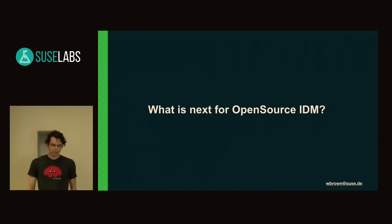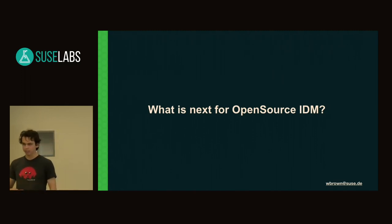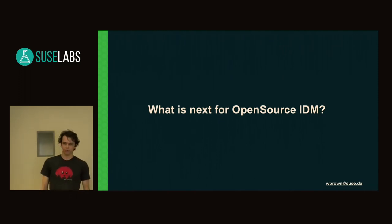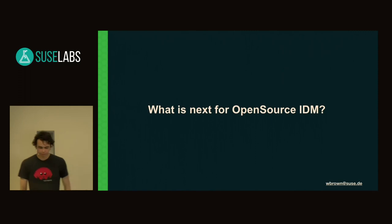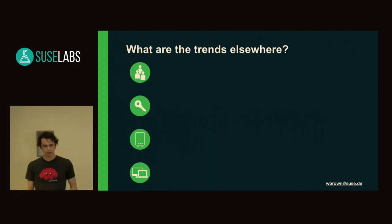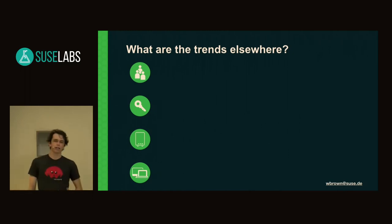So I asked at Samba XP: what's next for open source IDM? There's a lot of things we can do at the moment with things like 389 and Samba 4 to bring in compatibilities for Unix clients and to get Windows machines working. But we still need to be looking towards the future, because a lot of these are old technologies. When we start talking about what is next for open source identity management, we really need to think about what are the trends in computing and especially identity management and security.